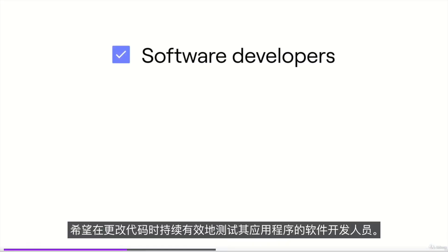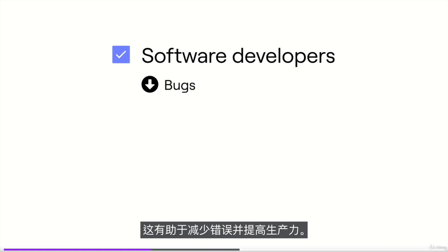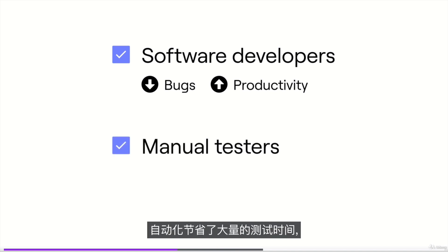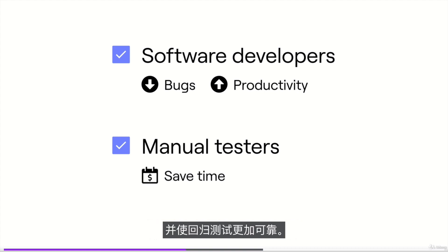Who should learn automated testing? Software developers who want to continuously and effectively test their applications as they make code changes — this helps reduce bugs and improves productivity. And manual testers who want to take the next step in their careers. Automation saves a lot of testing time and makes regression tests far more reliable.